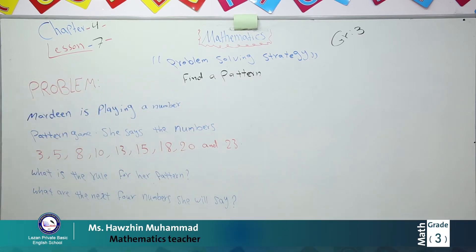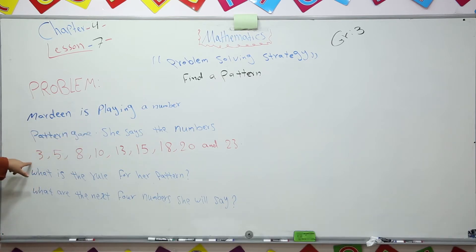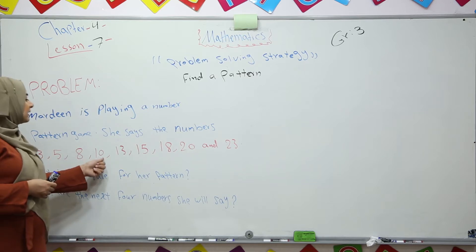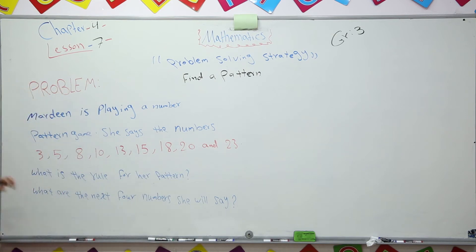Now it's our problem. Mardin is playing a number pattern game. She says the numbers 3, 5, 8, 10, 13, 15, 18, 20, and 23. We should find these two things.